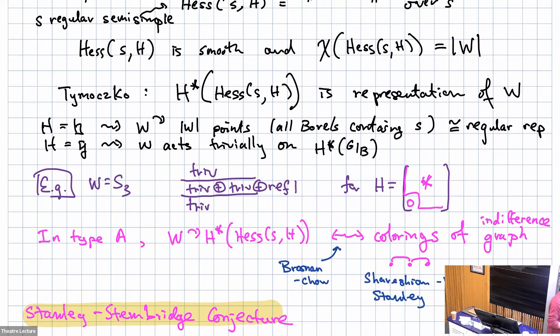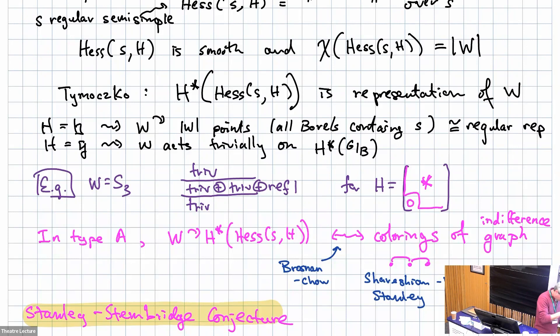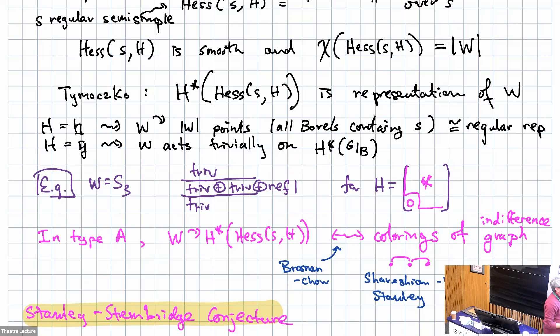In type A, there's another piece of the story. You can build a graph from any of these ideals — using the roots not chosen to connect endpoints — and look at all the colorings of this graph to build a polynomial. Shareshian and Wachs took a definition of Stanley and graded it. Then, first proven by Brosnan and Chow, it turns out — possibly up to tensoring with sign — that this chromatic symmetric function is the same representation you get from the Hessenberg variety. So for each H there's a simple way to write down a graph, and the two constructions are the same.